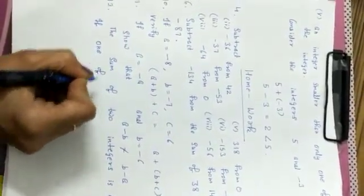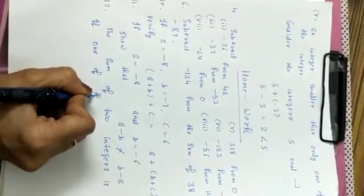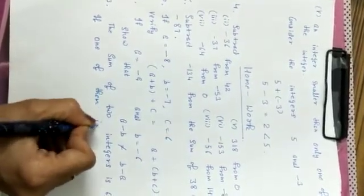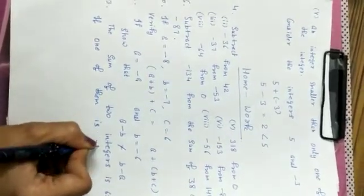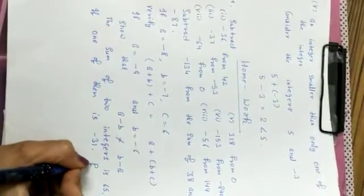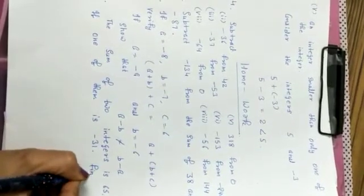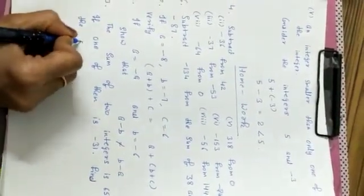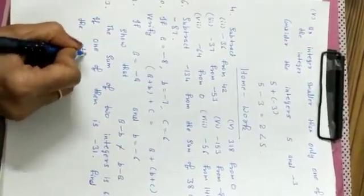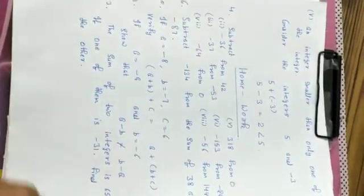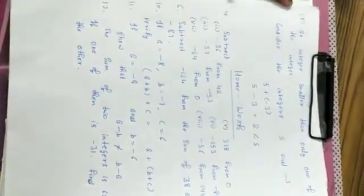The sum of two integers is 65; if one of them is -31, find the other. Do all solutions with proper statements as demonstrated. We will continue with exercise 1b in the next video.